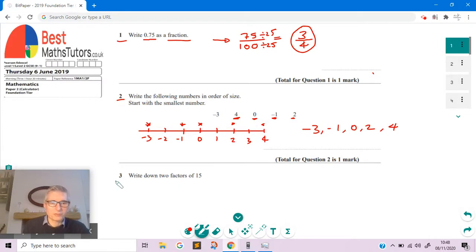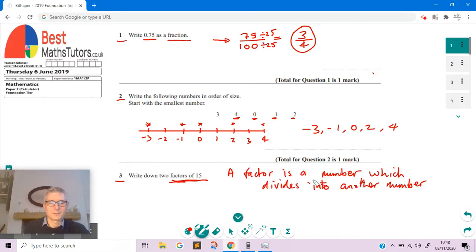For question three, we've got to write down some factors of 15. What a factor is, is a number which divides into another number. So we're looking for numbers which will divide into 15 with no remainder. We can see that three will go into 15, because if we wrote out the three times table we'd have 3, 6, 9, 12, 15. So three is one of the factors of 15. We could write down five as well, because five goes into 15.